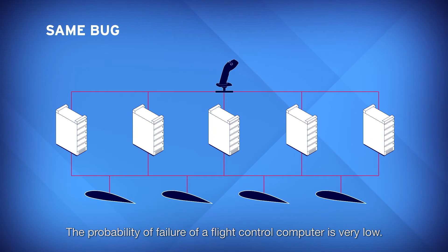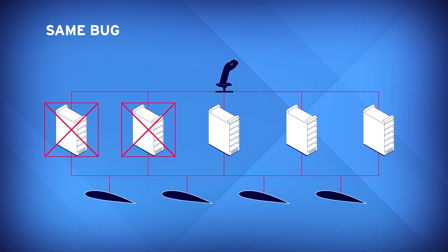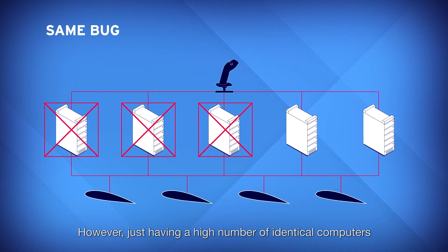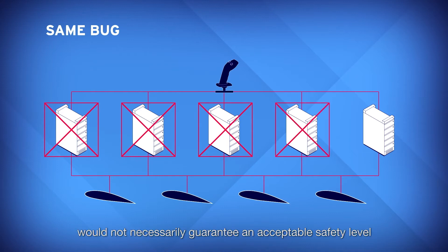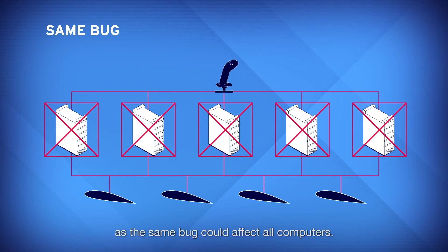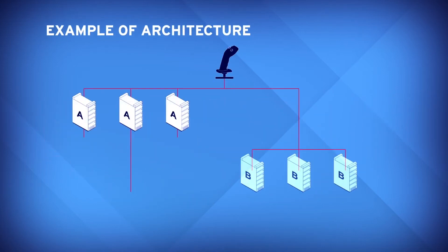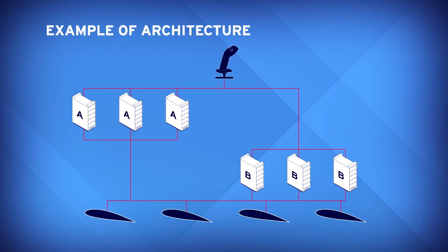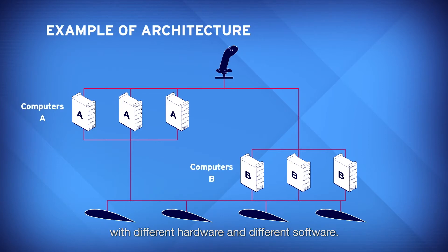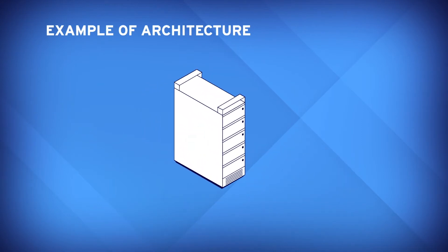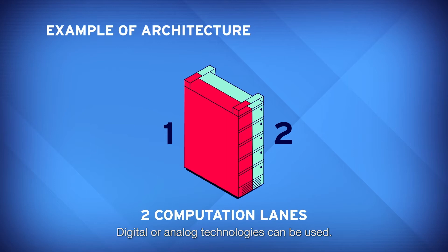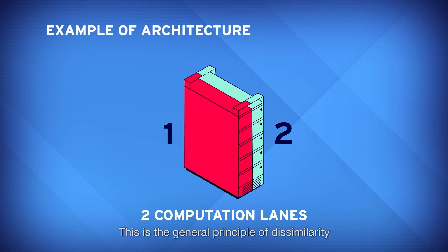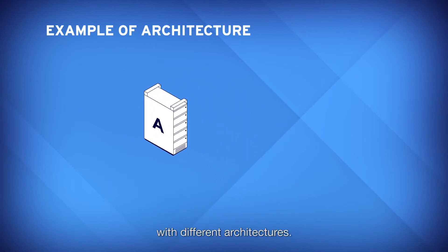The probability of failure of a flight control computer is very low. However, just having a high number of identical computers would not necessarily guarantee an acceptable safety level, as the same bug could affect all computers. For this reason, different types of computers need to be installed with different hardware and different software. Each computer usually includes two computation lanes with different software. Digital or analog technologies can be used. This is the general principle of dissimilarity implemented by the manufacturers with different architectures.